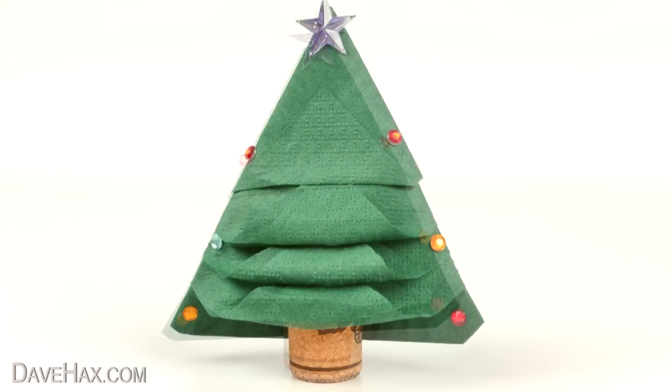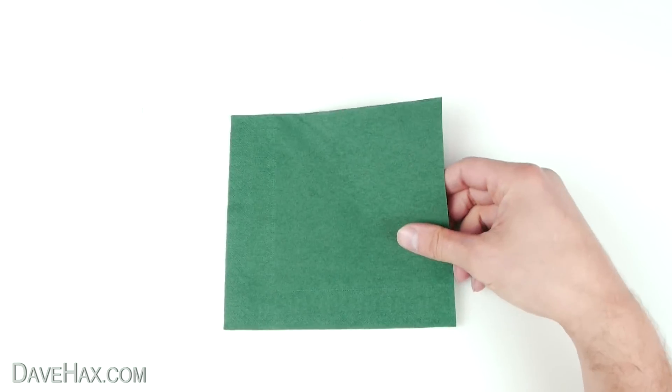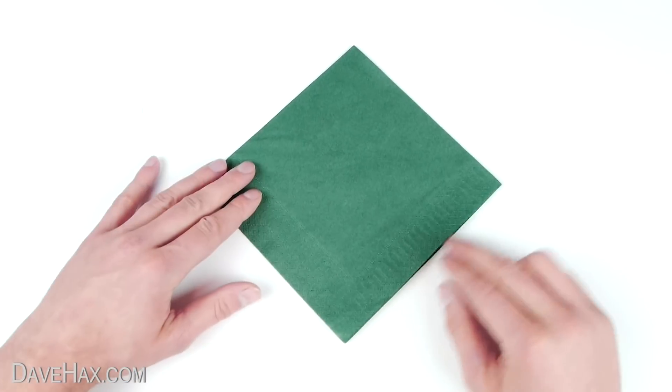Today I'm going to show you how to make a really cool Christmas tree out of a paper napkin. Start by taking a napkin and make sure it's folded so all of the opening corners are at the bottom.